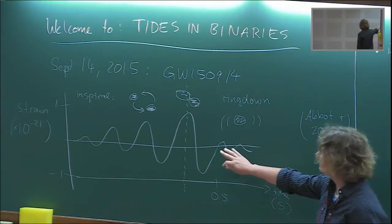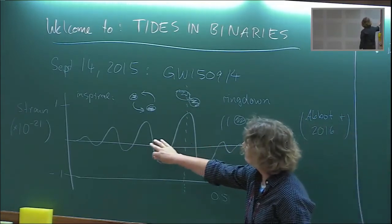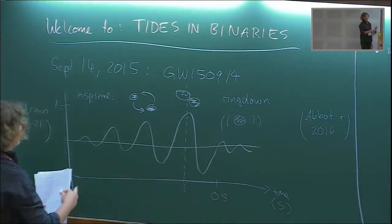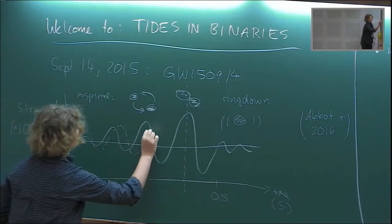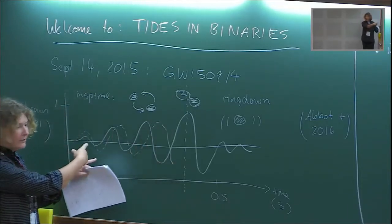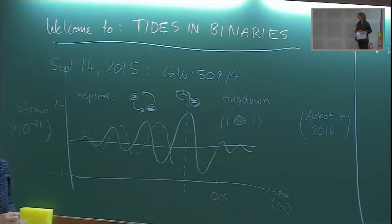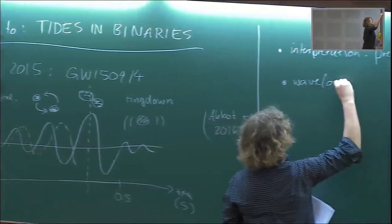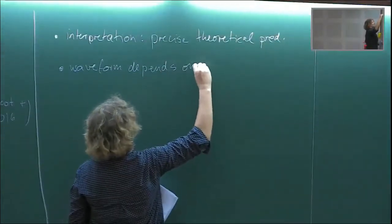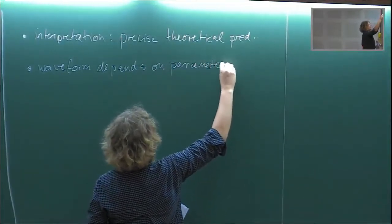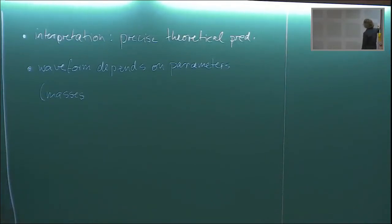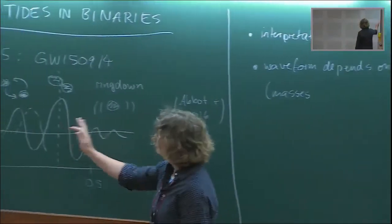The way information is extracted from these signals is: you have a signal in the data, and you have theoretical models for different parameters that you compare with. You vary the parameters in the model until it produces the highest overlap with the signal. The waveform depends on parameters — for example, the masses of the objects. If you have low masses, the amplitude will be lower and the merger will occur at higher frequencies.